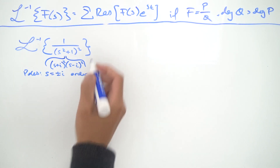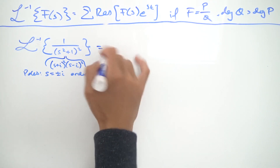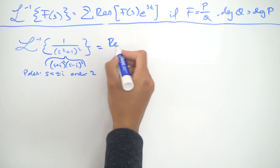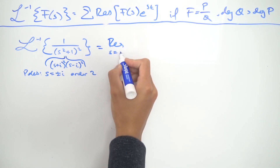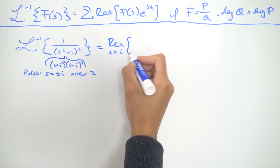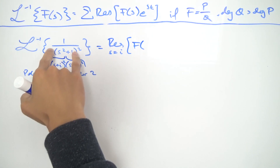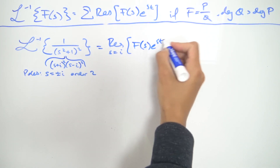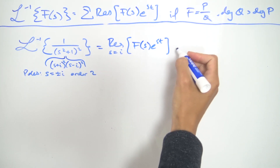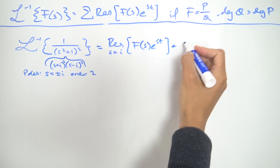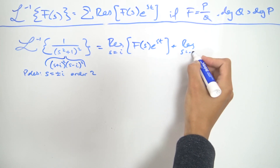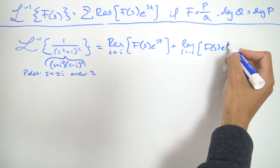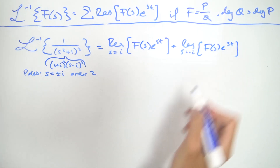We know where the poles are, so we can apply the formula to sum the residues. We have the residue at s = i of f(s)·e^(st), and then we add the residue at s = −i of f(s)·e^(st).